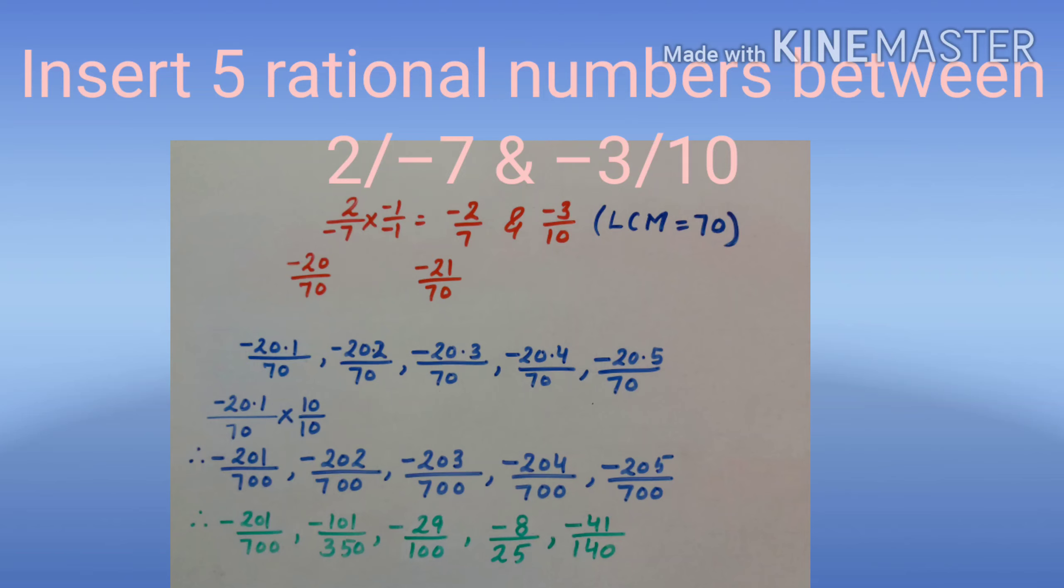Let's take minus 20.1 upon 70, minus 20.2 upon 70, minus 20.3 upon 70, minus 20.4 upon 70, and minus 20.5 upon 70.